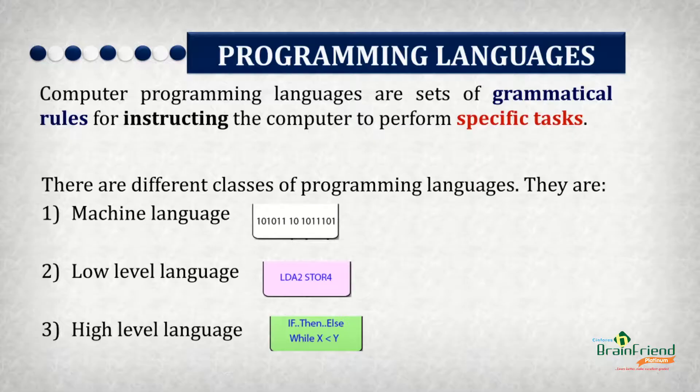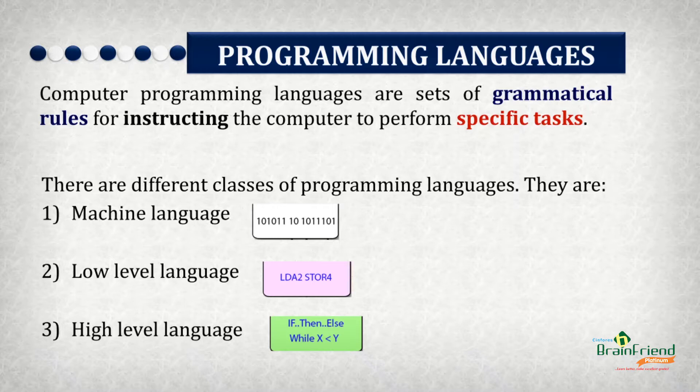So how are humans and computers able to communicate and understand one another? This is made possible through the act of programming, and programming is done using programming languages. Programming languages are a set of grammatical rules used for instructing the computer to carry out specific tasks. Developments in programming languages have brought about three classes: machine language, low-level languages, and high-level languages.